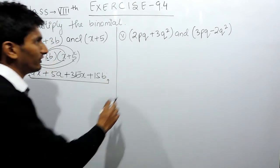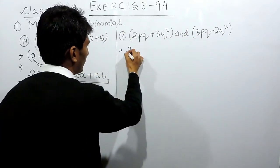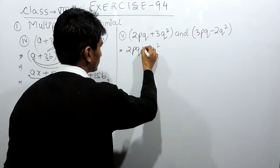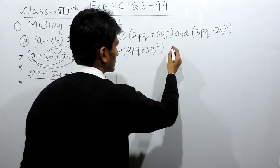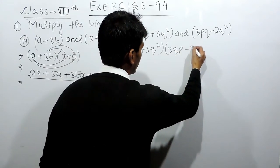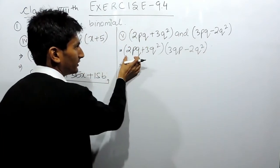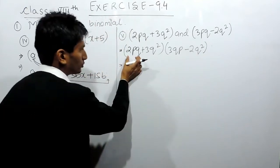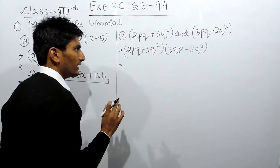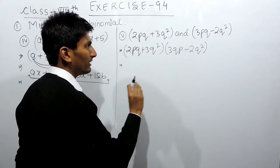Now similarly we have to multiply this binomial with this binomial. The second problem is set up with the first binomial and (pq minus 2q²). I have to multiply the first term with both terms, so the constants will be multiplied with constants and variables with variables.